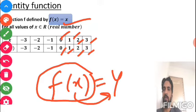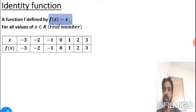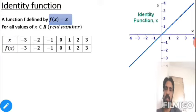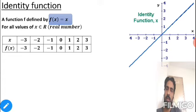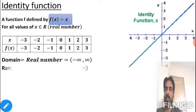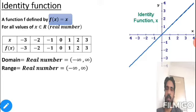For the identity function, the domain is the whole set of real numbers because we can put every real number inside this machine. The range is also real numbers because it outputs the same number. If you draw the graph on graph paper with X-axis and Y-axis, you get a straight line passing through the origin: (0,0), (1,1), (2,2), (3,3), (4,4) — a line at 45 degrees.